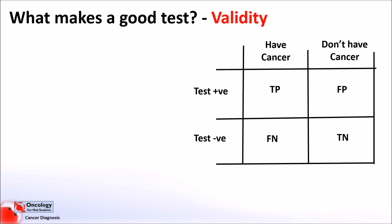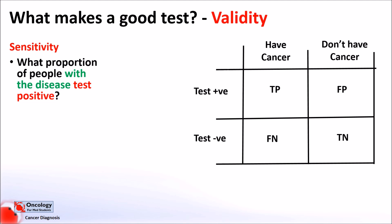Sensitivity is defined as the proportion of people who have the disease who test positive. Out of all the people who have the disease who took the test, what percentage correctly got a positive result? The total number of people with the disease will be the number of true positives — those with the disease who got a positive result — added to the false negatives, those with the disease who test negative.